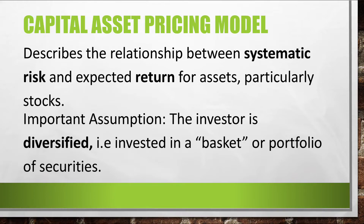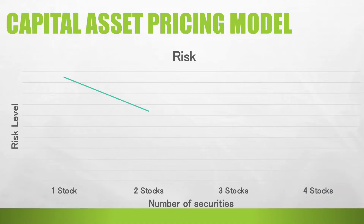An important assumption of CAPM is that the investor is diversified — that is, invested in a basket or portfolio of securities. To appreciate this assumption, we need to understand how risk on a standalone basis, assuming you have only one investment, differs from risk on a portfolio basis, assuming you have a basket of securities. Let us refer to the following graph showing the relationship between the number of securities and the risk level in a portfolio. Generally speaking, if we increase the number of securities in a portfolio, say from 1 to 2, the overall risk will go down. Why does this happen? Because of diversification.